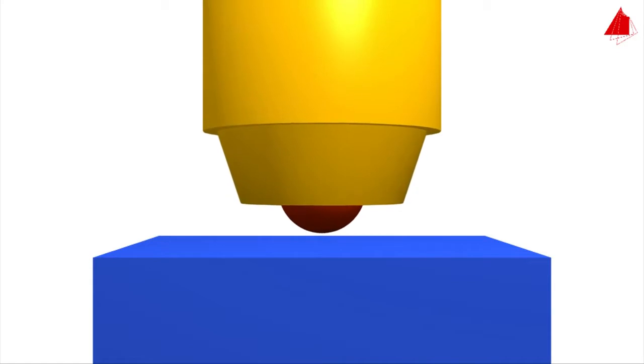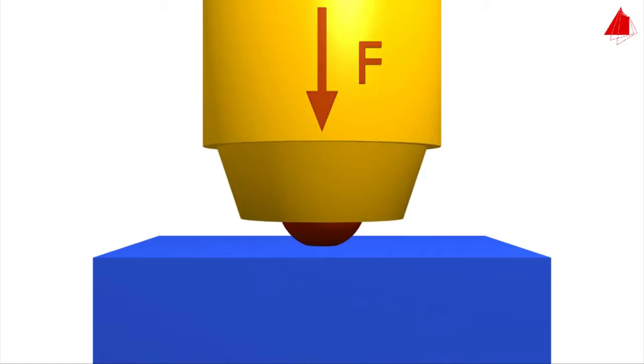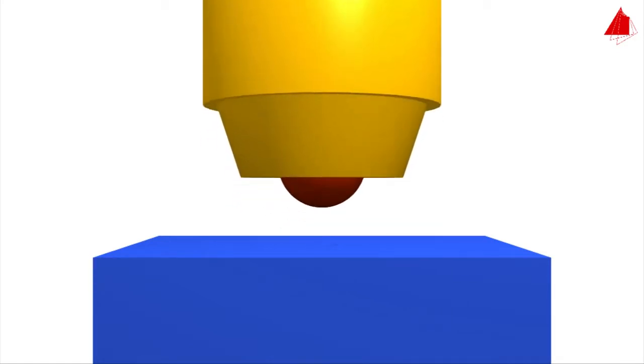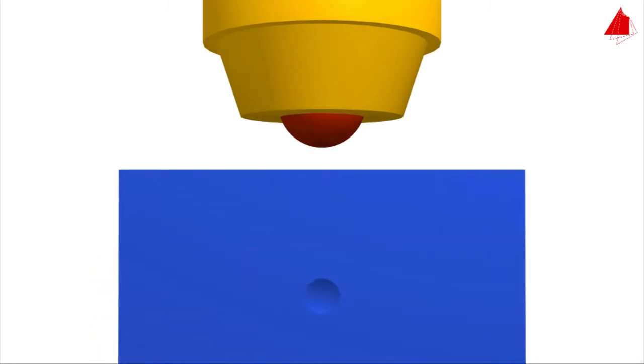The principle of the Brinell Hardness Test is to press a hard spherical indenter with an exactly defined force onto the test piece, then evaluate the surface area of the indentation.